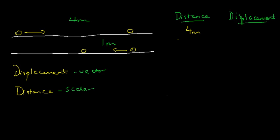How do we represent displacement? Since displacement is a vector and the balls are moving along a straight line, we can represent displacement by calling the right-hand side as the positive direction and the left-hand side as the negative direction. Since the ball has moved from left to right, we can say the displacement is plus 4 meters. The plus sign tells us its direction is to the right.